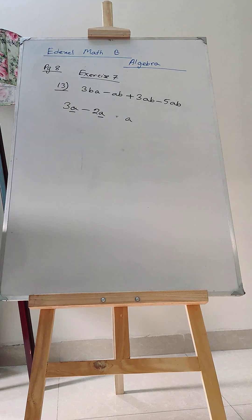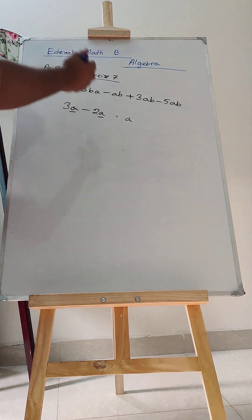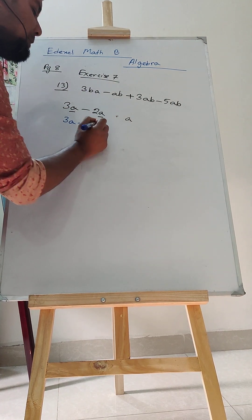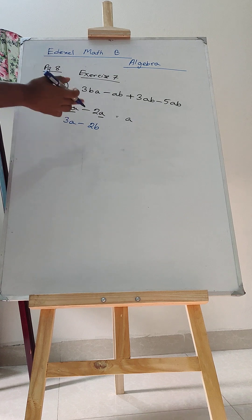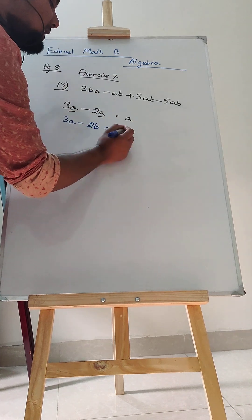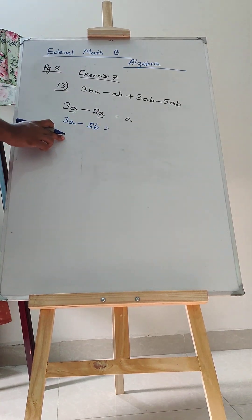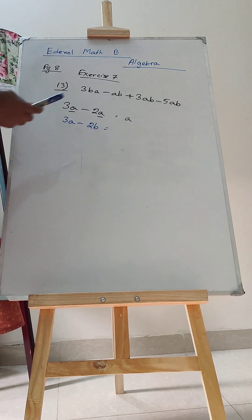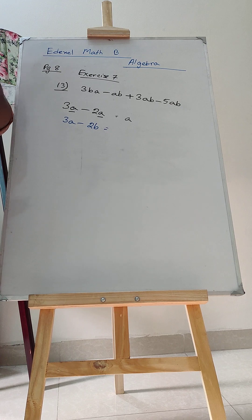But what if, instead of A, we have 2B here. Then what to do? We could not have done anything. This is your final answer. Because you cannot subtract variable A from variable B or vice versa. Or you cannot add also.